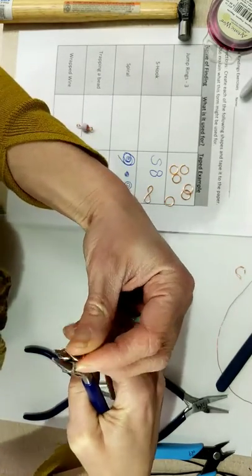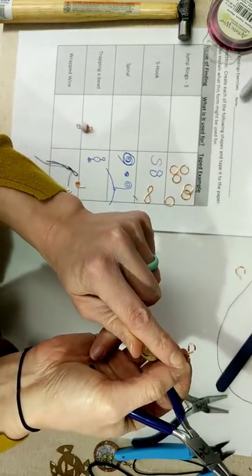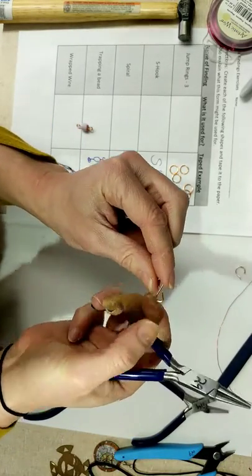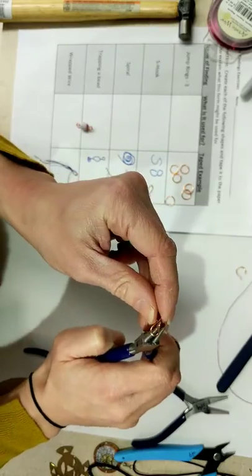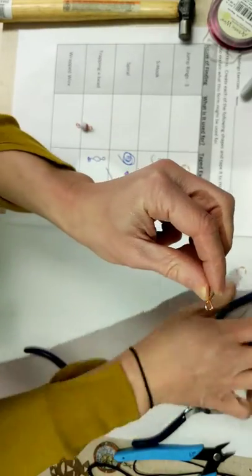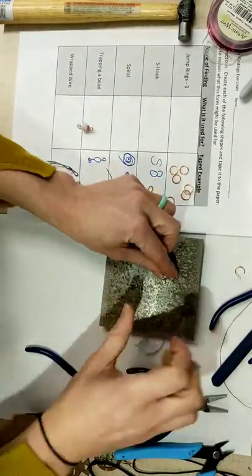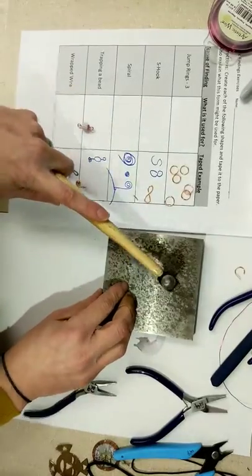The goal is that your ends touch that wire in the center. If you need to readjust, you can do that. Same thing as before, putting it down, hammering, done.